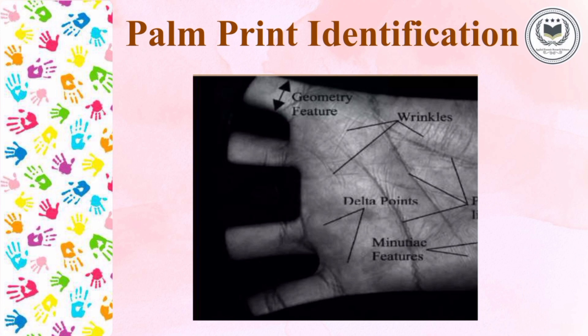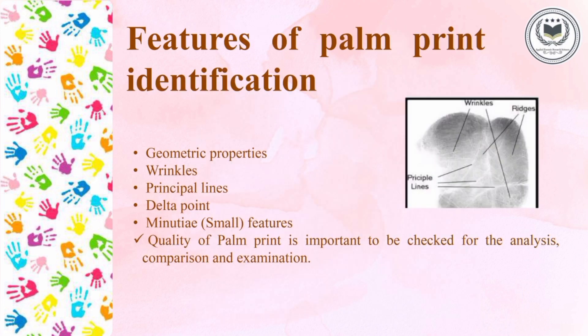Palm print identification is done on the basis of some features: geometric properties, wrinkles, principal lines, delta points, and minutiae — small characters or features. The quality of the palm prints is very important because we have to further analyze, compare, and examine it. These features must be identified very carefully and the print should be of good quality.